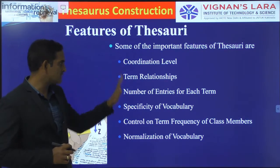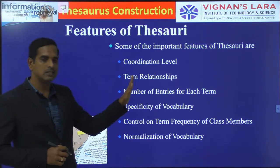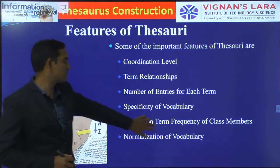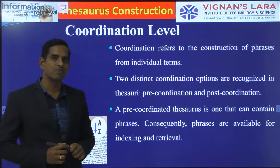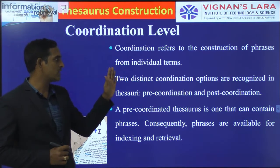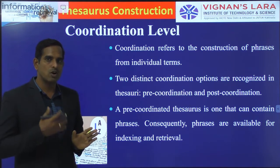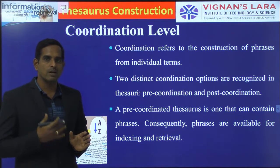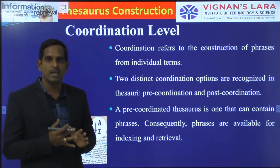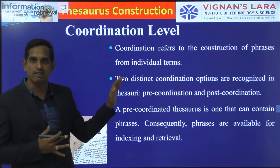We will be having six features: the coordination level, the term relationships, and other features. In the previous session we looked about the coordination level. The coordination level refers to the construction of phrases from individual terms — how many terms can be present in a phrase is your coordination level.